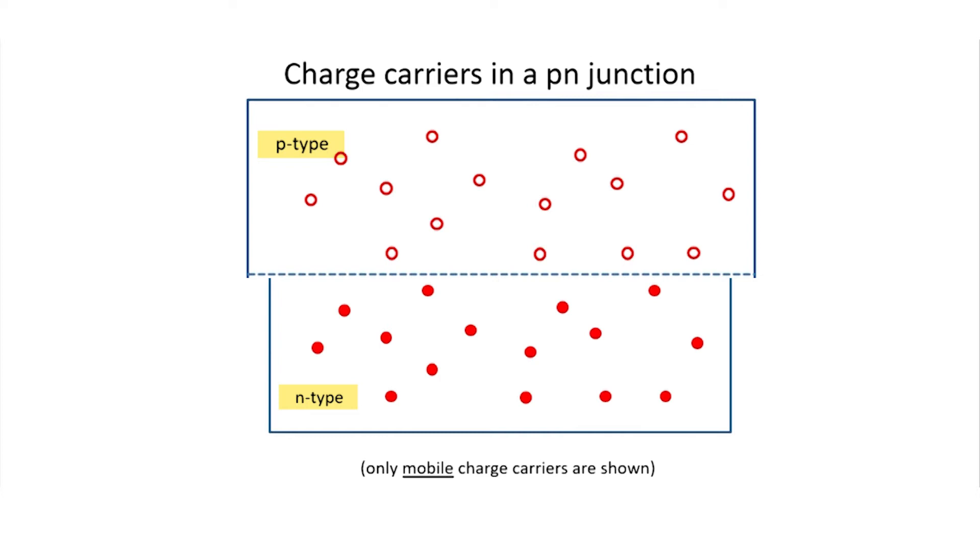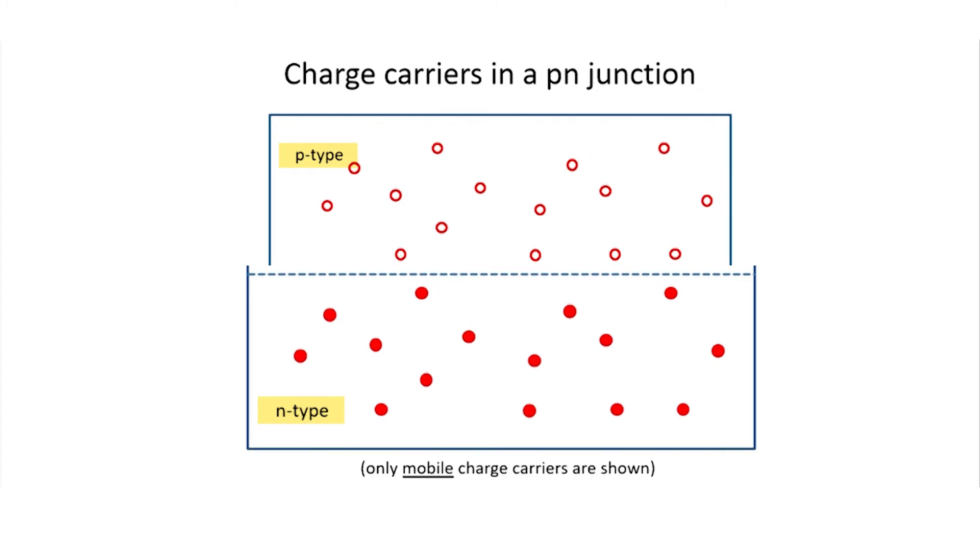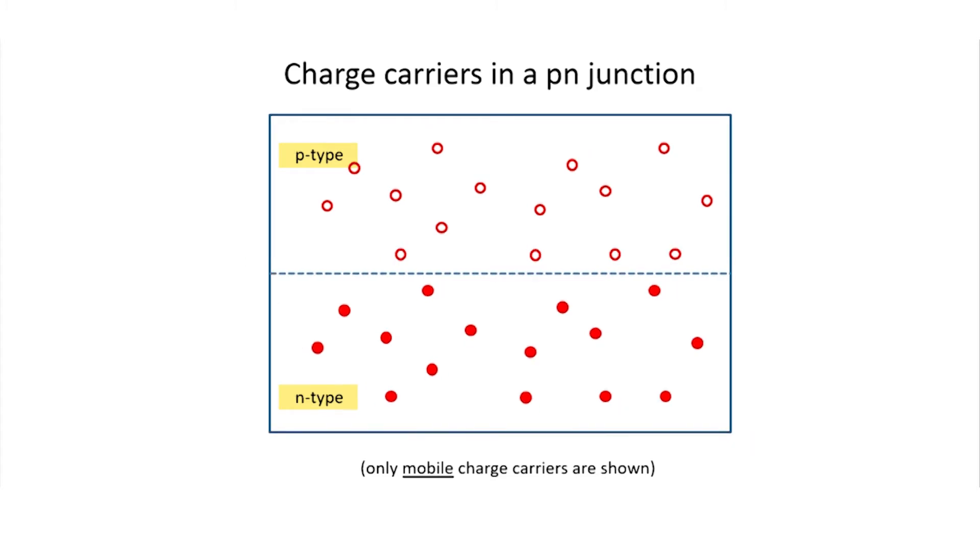Obviously, there are a few free electrons up here and a few free holes down here too, but the numbers are vanishingly small, so I've not drawn any of them. Once you start doping things with phosphorus or boron, the number of carriers due to the phosphorus or boron just completely and totally outnumber those that are intrinsic to the silicon itself.